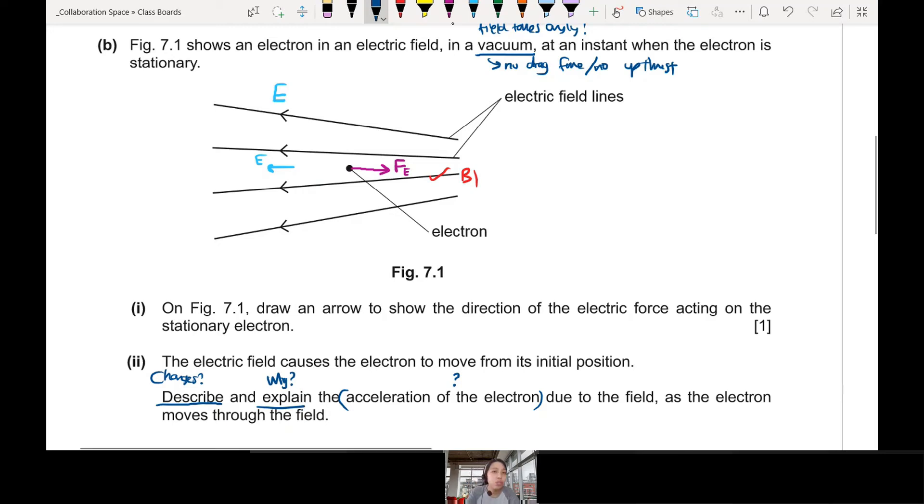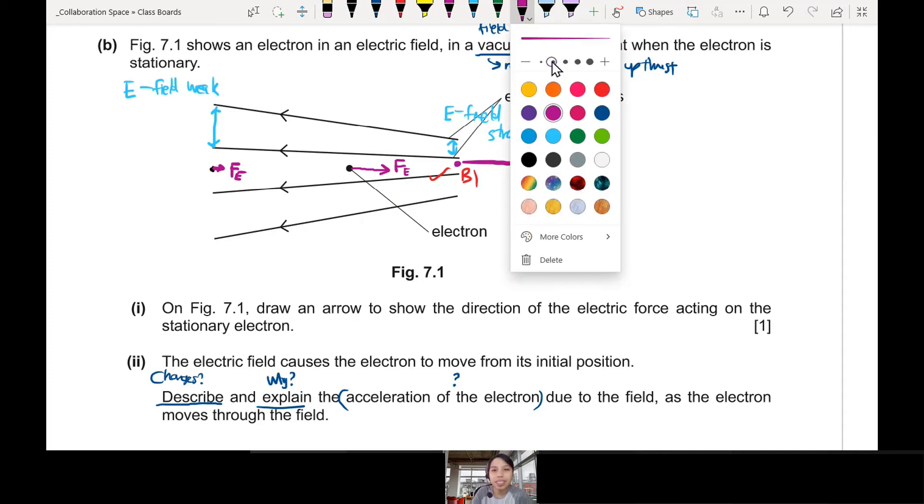Something to note here is the electric field is non-uniform. Because you look at this spacing here. Such a big spacing. That means at that point, the E field is very weak. Very far apart spacing. But as you go to over this side, the E field is quite strong. It's stronger. So because of that, your force actually will change whether you're on the left side or you're on the right side.